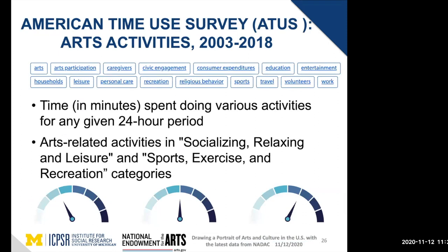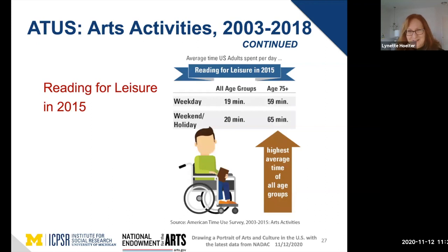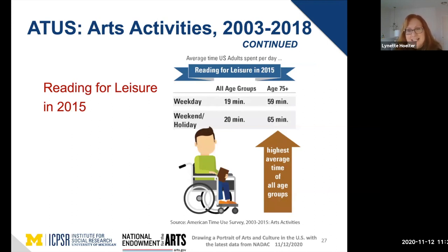The American Time Use Survey Arts Activities module is another part of a larger longitudinal data collection effort. The ATUS looks at what people are doing over a 24-hour period — like a diary study. On the NAIDAC website, we have arts-related activities covering socializing, relaxing and leisure, sports, exercise, and recreation. This infographic covers reading. It would be interesting to compare these data to similar data collected during the COVID period — from the 2015 infographic, retirees appear to have more time for leisure reading than the rest of us.